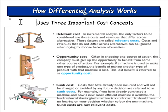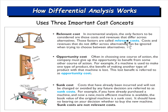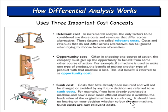The first key concept is relevant cost — we are only interested in costs or revenues that differ across alternatives. Irrelevant costs do not vary between alternatives. Some costs are sunk costs: they have already been incurred and won't change regardless of what decision is made. For example, if you've already purchased a machine and a new more efficient one is available, the book value of the original machine is a sunk cost.